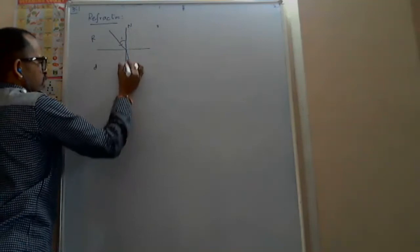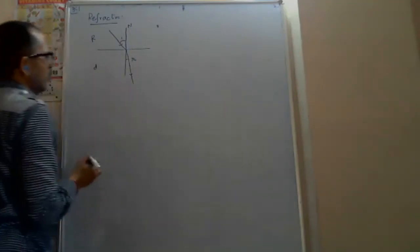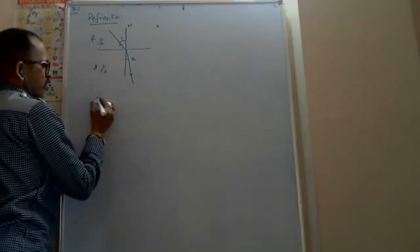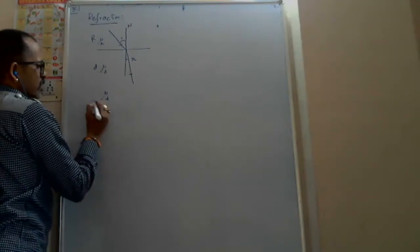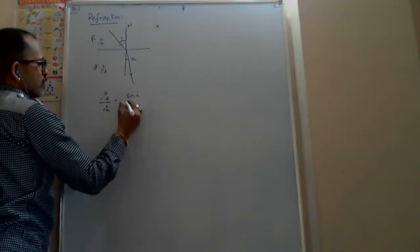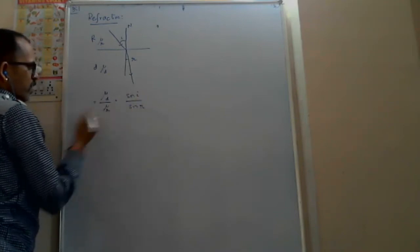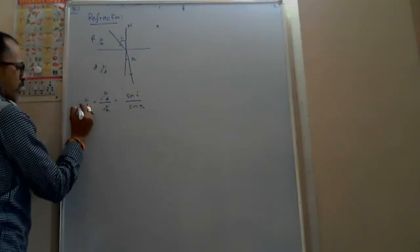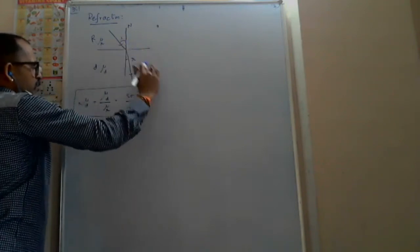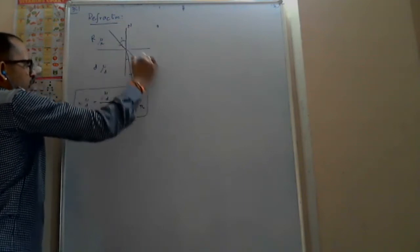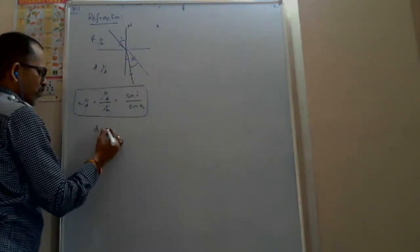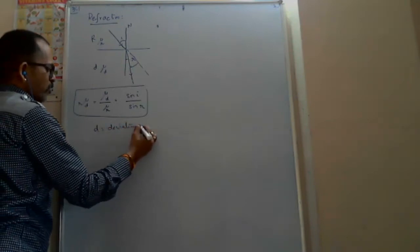Towards the normal. And here the angle of refraction we take as R. Suppose the refractive indices are mu-R and mu-D. In this case, the deviation of the incident light ray — instead of going straight, it bends towards the normal — so deviation equals i minus r.